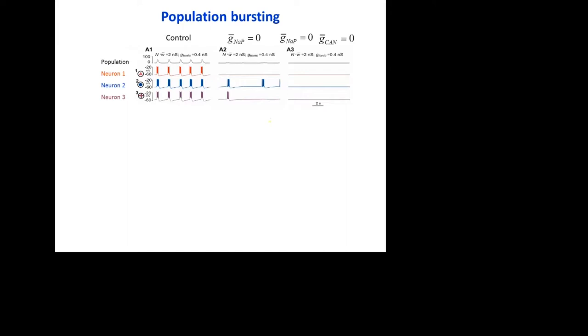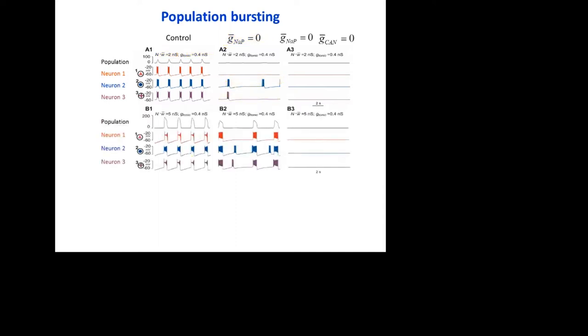First of all, in order to achieve synchronous discharges in such a heterogeneous population, the connections should be sufficiently strong. At relatively low tonic drive, the rhythmic activity in the network can be totally abolished by suppressing the persistent sodium current. However, with stronger connections and/or greater number of neurons, one can observe something different. Now the blockade of persistent sodium alone does not lead to the rhythm cessation. But if we also block CAN current, the activity in the network is totally gone.